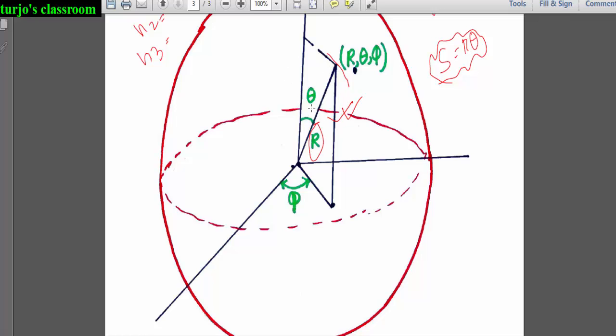And this length will be r sin theta. So if r sin theta rotates in this way, then the angle or any differential change in angle phi can be converted into length if we multiply it with r sin theta. Therefore, apparently h2 is r and h3 is r sin theta.